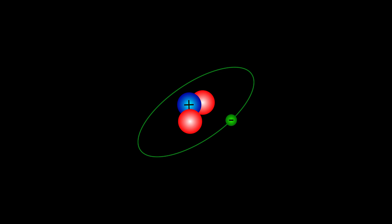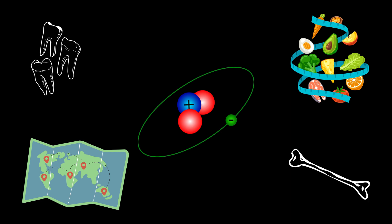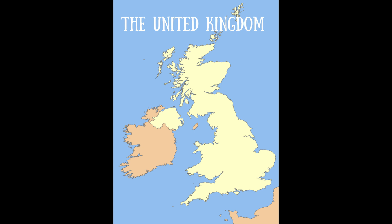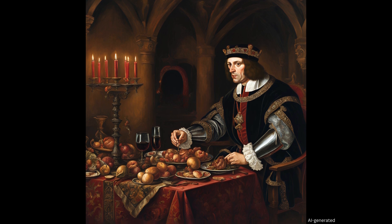For Richard III, isotope signatures confirmed his origins in Northamptonshire, but they also showed that he moved to Western Britain by the age of seven or eight — matching historical sources that record him living at Ludlow Castle in the Welsh Marches in 1459. He then spent the majority of his adulthood back in eastern England. His move out of Northamptonshire was associated with greater consumption of cereals and less meat and fish, and then during the last years of his life, when he was king, he consumed greater amounts of high-status luxury foods such as wildfowl and freshwater fish, and a lot more wine. Literally, you are what you eat.